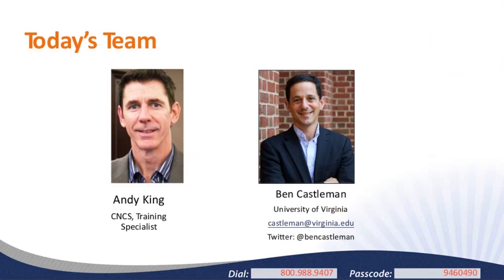I have the happy privilege to introduce our main presenter. Dr. Ben Castleman is an Associate Professor of Education Policy at the University of Virginia. Ben's research applies insights from behavioral economics and social psychology to improve college access and success for low-income and non-traditional students. Ben is the author of several books, including the forthcoming book The 160-Character Solution: How Text Messages and Other Behavioral Strategies Can Improve Education. Ben has presented at the White House Summit on expanding college opportunity and testified before Congress. Ben is also an AmeriCorps alum, having served two terms in Rhode Island. We're also joined by Bethany DeSablin and Scott Weinrobe from Education Northwest, and our producer today is Sam Graziani from JBS International.